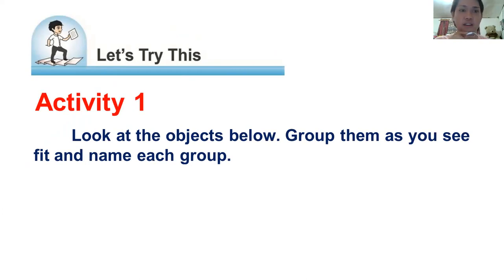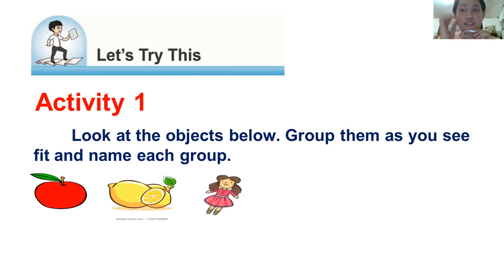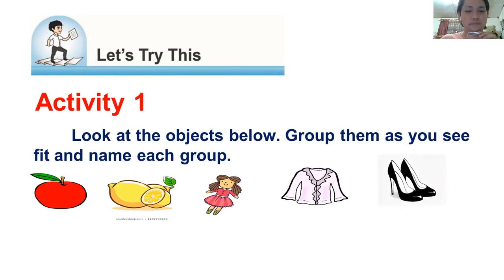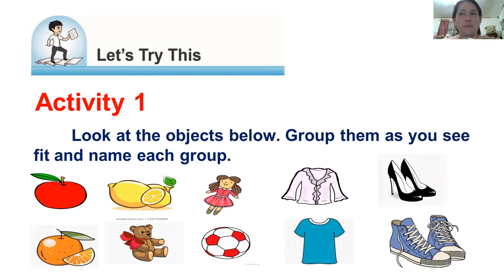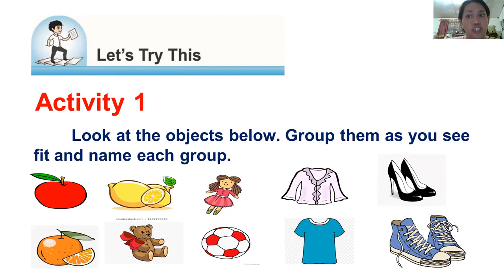As you can see in the instructions: look at the objects below, group them as you see fit, and name each group. You can see an apple, lemon, doll, dress, shoes, orange or tangerine, a seashell, a bear, a ball, another dress, and shoes. So I want you to look at those objects. As you can see, there are a lot of varieties. You can group them and name each group. I'll give you time to think about that.